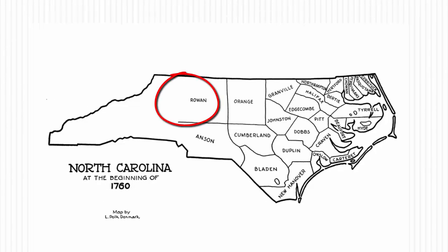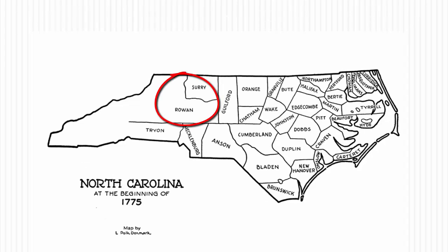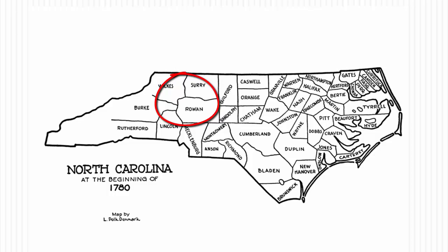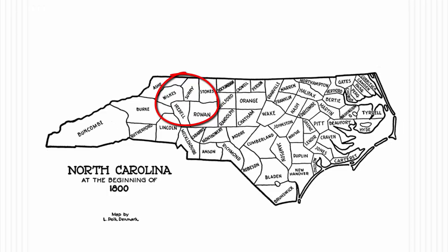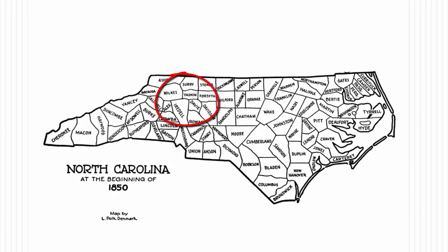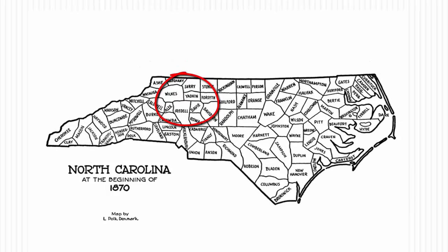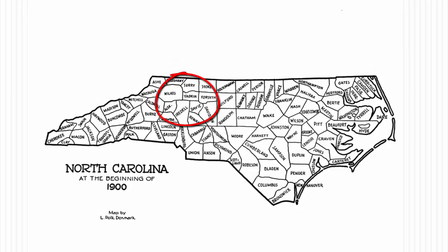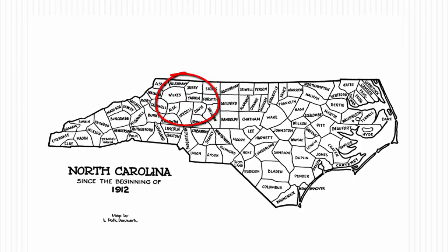For example, your North Carolina ancestors may have lived on the family farm located in Yadkin County for generations without ever moving. However, records might be found at different times through history in the jurisdictions of Yadkin, Surrey, Rowan, and Anson counties.